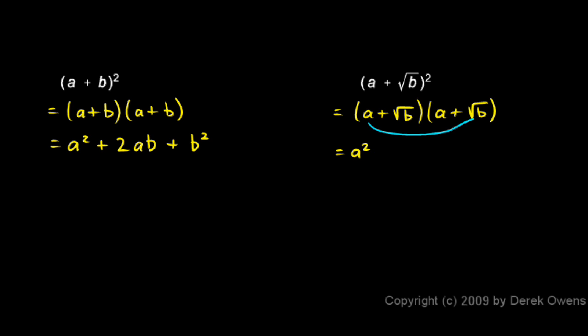The outer is a times the square root of b, so let's write that, plus a times the square root of b. The inner is a times the square root of b. And then the last is the square root of b times the square root of b, which is the same as the square root of b squared, which is just b.